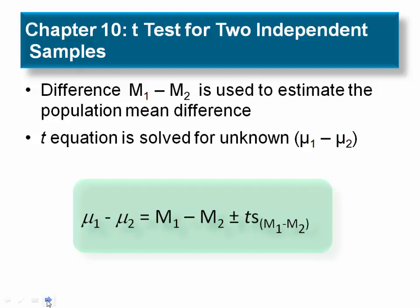Then from that number we subtract, and to that number we add the product of the multiplication of the critical t-value times the estimated standard error.